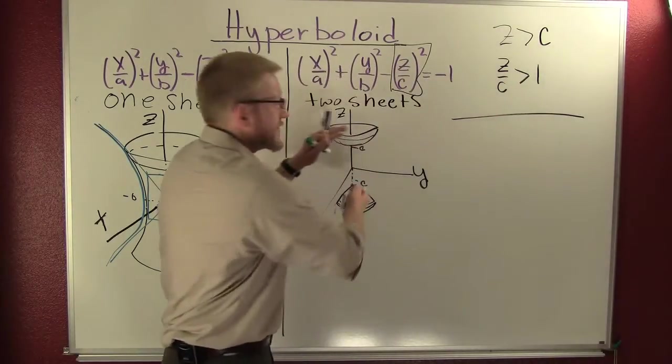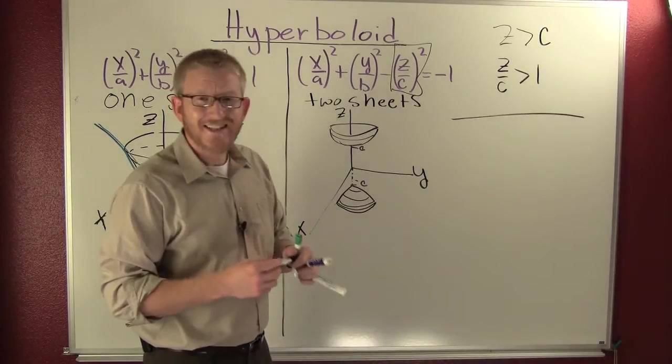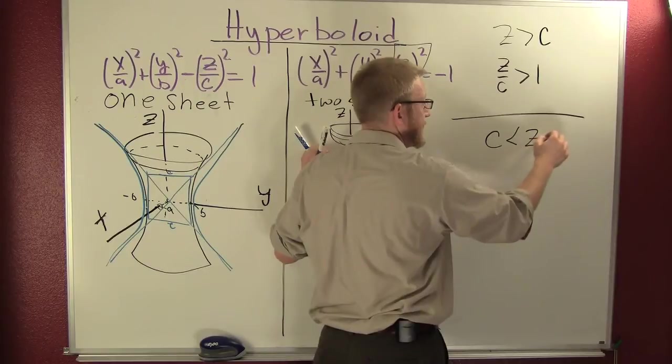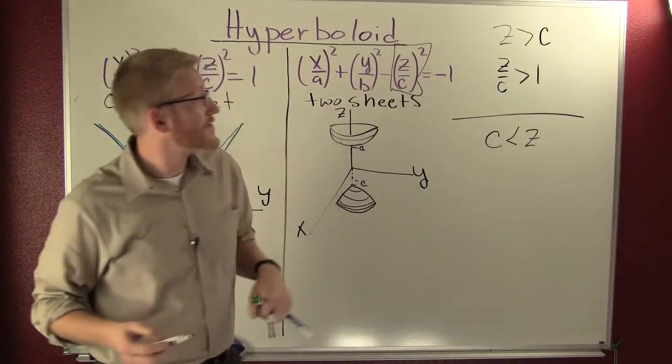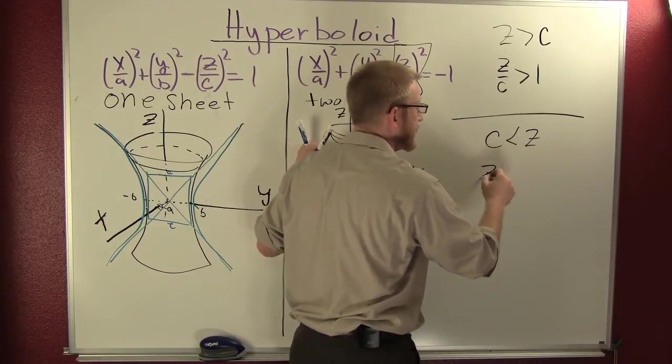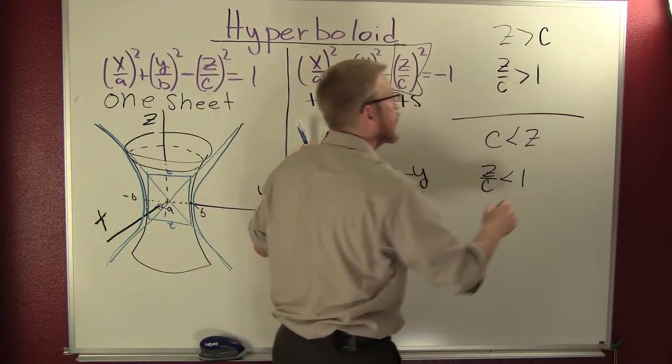The trick is, and why this surface disappears in between C and minus C, is when C is smaller than Z. When C is smaller than Z, then Z over C is smaller than one.